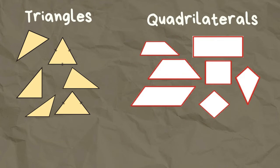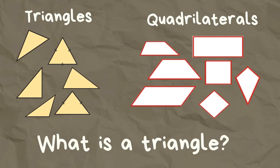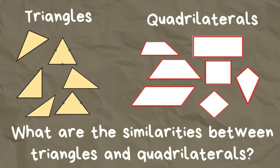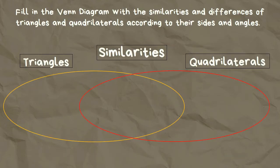Take a look at these illustrations. These are triangles and quadrilaterals. Based on the presented pictures, what is a triangle? What is a quadrilateral? What are the similarities between triangles and quadrilaterals? Let's try to fill in the Venn diagram with the similarities and differences of triangles and quadrilaterals according to their sides and angles. Let's begin with triangles.